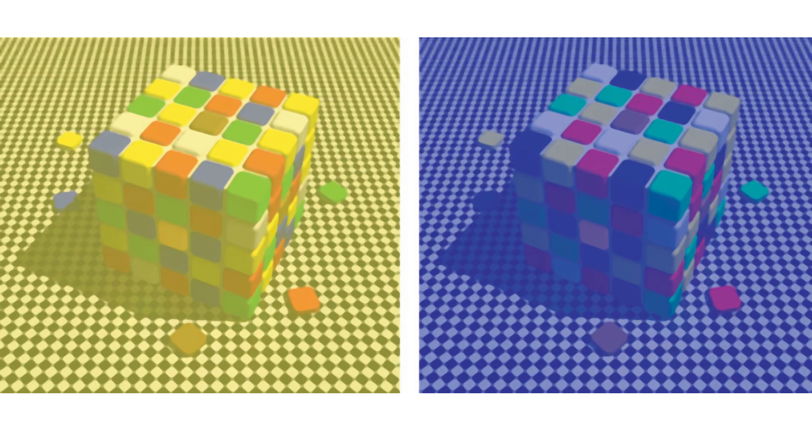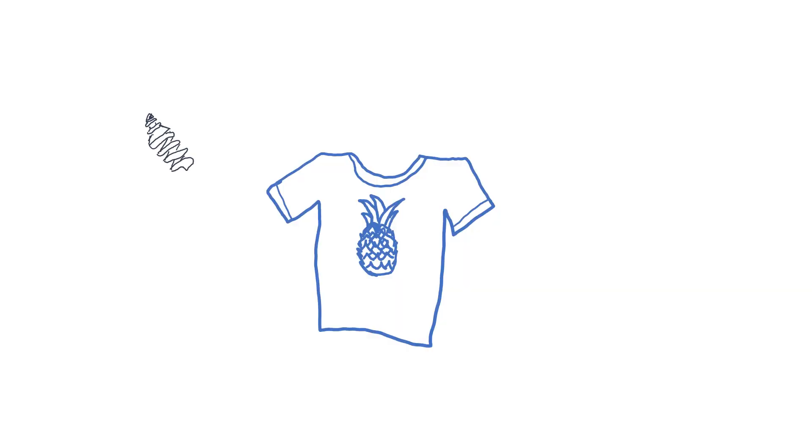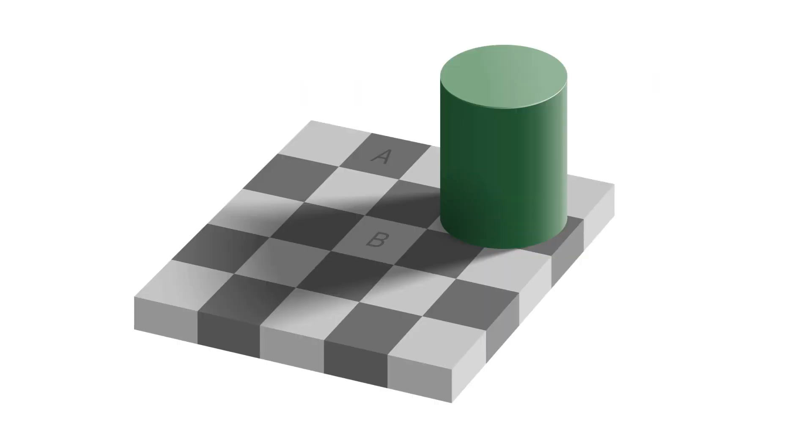So why does this happen? Your brain assumes the illuminant to infer the true color of an object. A blue shirt looks blue whether it's indoors illuminated by LED lights or outdoors on a sunny day. This is called color constancy. Or in the case of the checkerboard example, brightness constancy. In the first illusion, your brain assumes that one of these tiles gets less light due to the perceived shadow and concludes that it must be a brighter color.